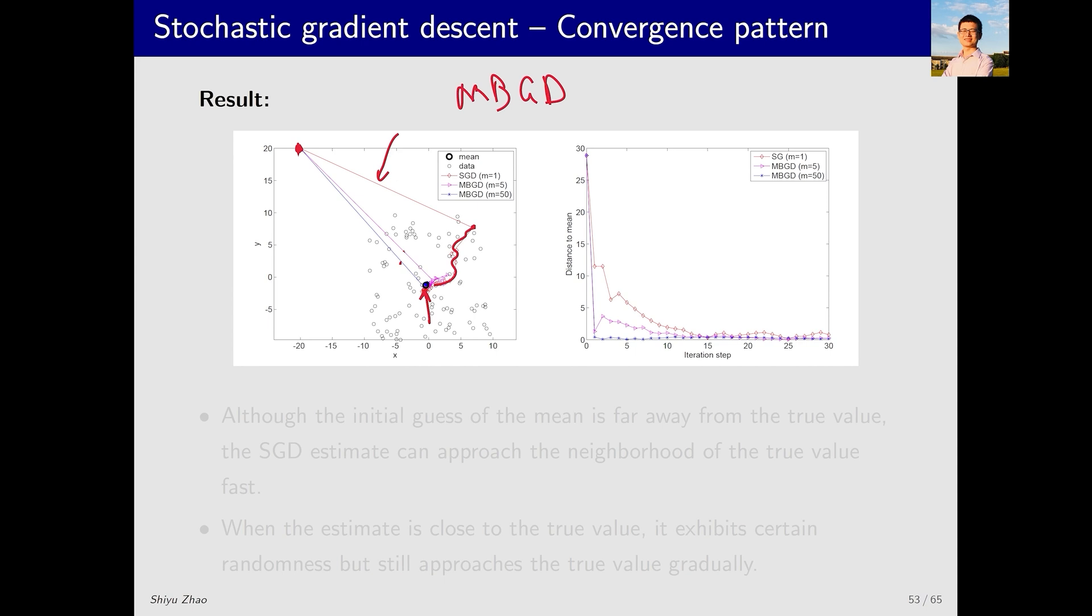Initially, w_k is far from w*. The SGD algorithm does not converge in a random manner, going in various directions. Instead, it converges quickly towards the w*. As it approaches the target, it exhibits some randomness. This observation aligns with our theoretical analysis.